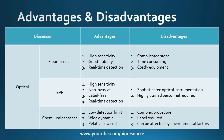SPR-based biosensors are very highly sensitive, non-invasive, label-free, and real-time detection is also possible. The disadvantage is that they require sophisticated optical instrumentation and highly trained personnel. For chemiluminescence, the detection limit is low meaning it can detect very low-load samples, it has a wide dynamic range, and the cost is also low. However, the procedure is complex, requires labeling of some reagents, and can be affected by environmental factors.